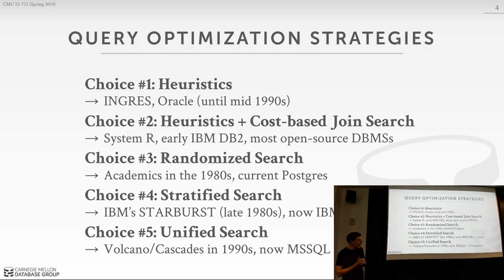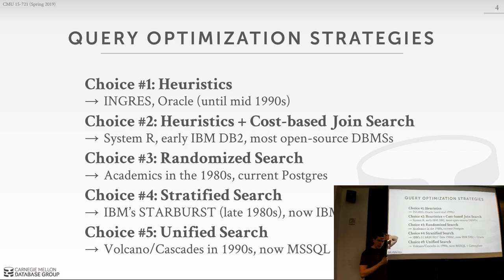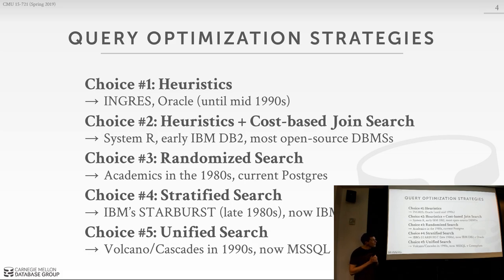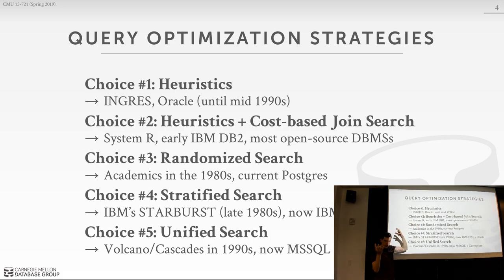To refresh where we were: I laid out five different ways to implement the search optimization strategy in a query optimizer. The first was just heuristics — doing rewrite rules without a cost model, like always pushing down predicates and limits. Then we talked about heuristics plus cost-based search from IBM System R, where you do rewriting first and then search for the best join order using bottom-up dynamic programming. Then we saw a randomized algorithm approach, where you periodically permute the query plan and jump to a new point in the solution space.